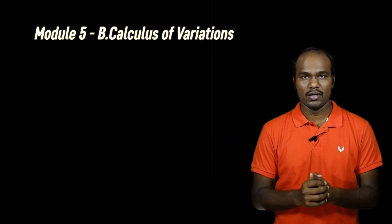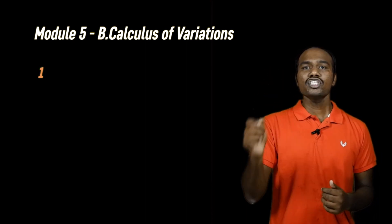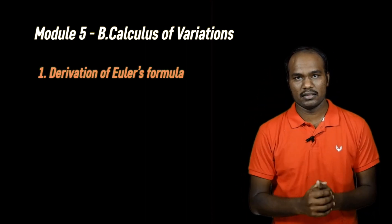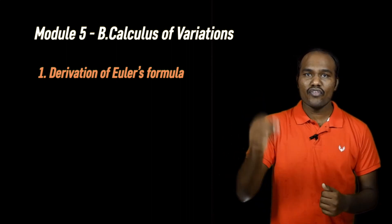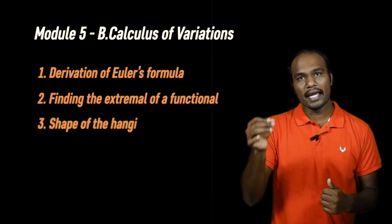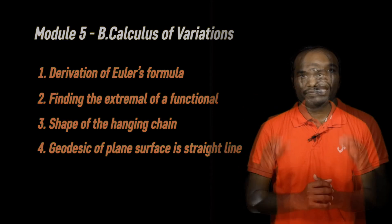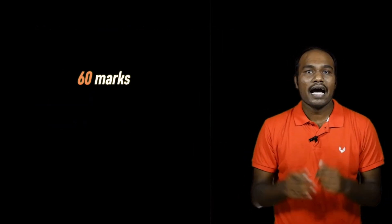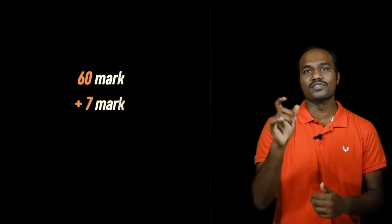Remaining part of module number 5 is calculus of variation. One definite question they ask every examination is derivation of Euler's formula. The rest of the questions they ask from finding extremals of functionals, shape of a hanging chain, geodesics of plane surface is straight line. If you learn these topics, you can easily score 60 marks. As a bonus, I will tell you 7 more marks question which is easy to learn at the end of this video.